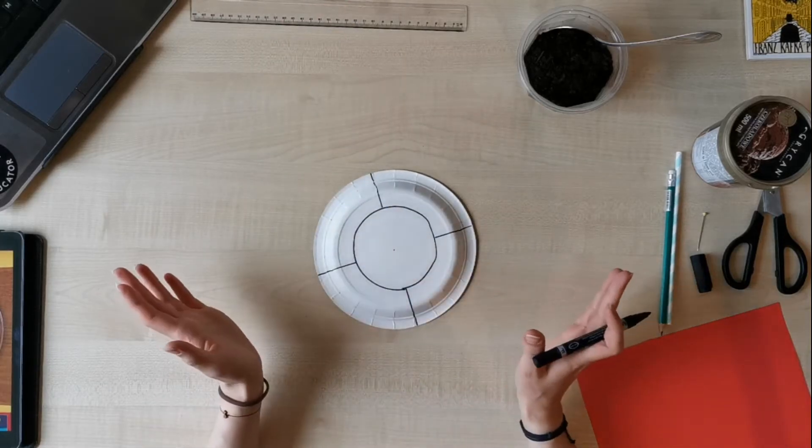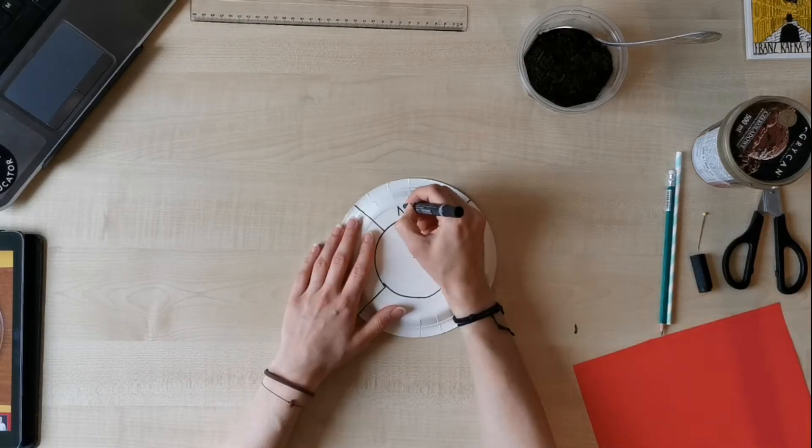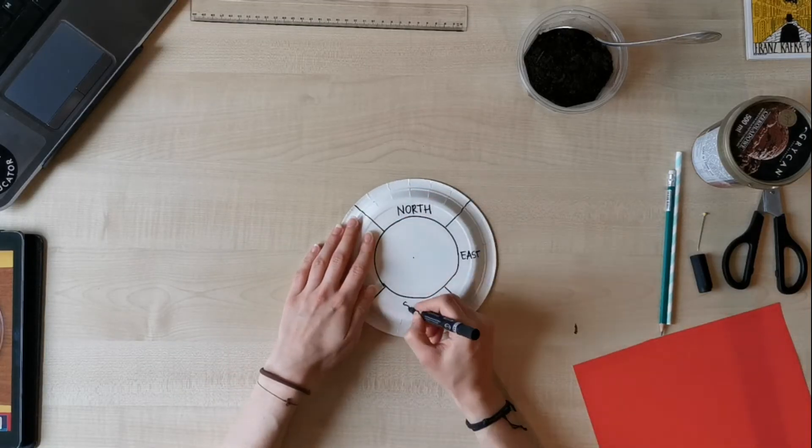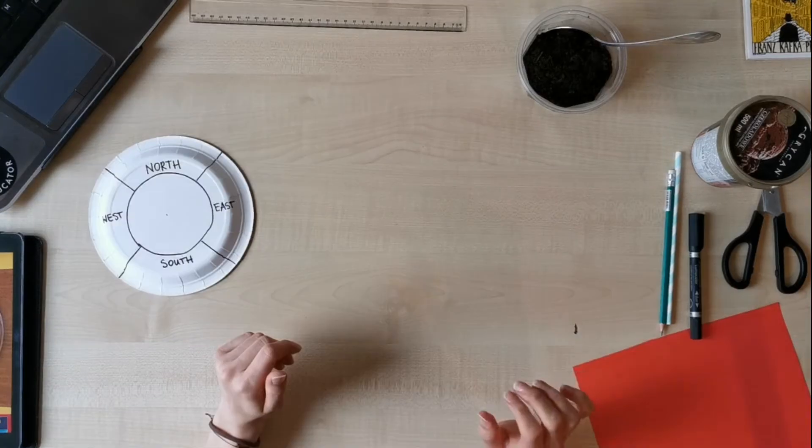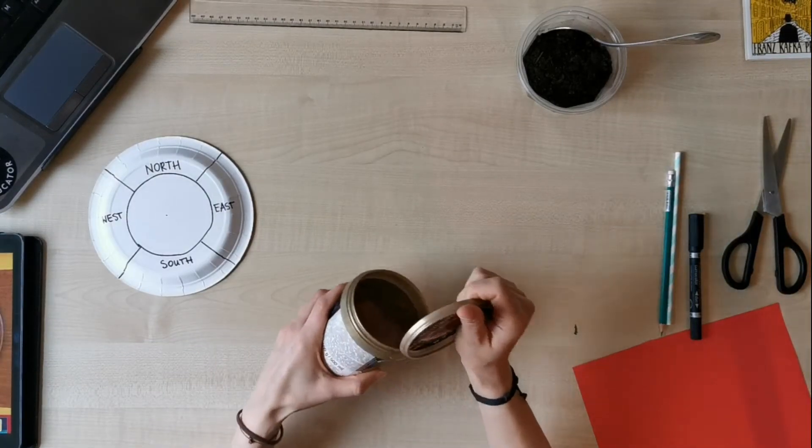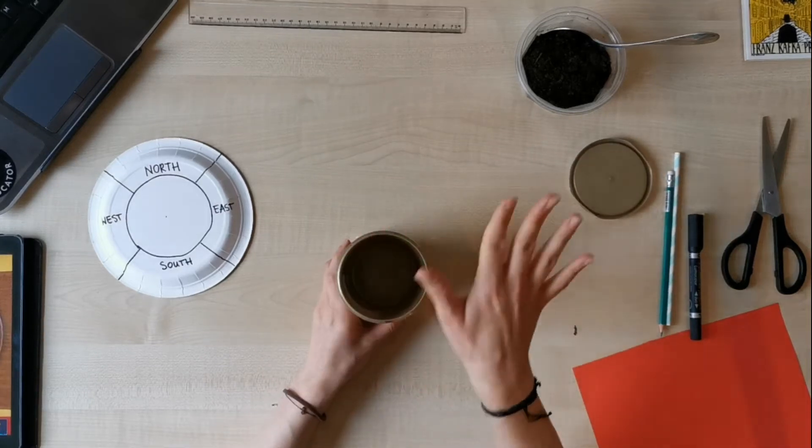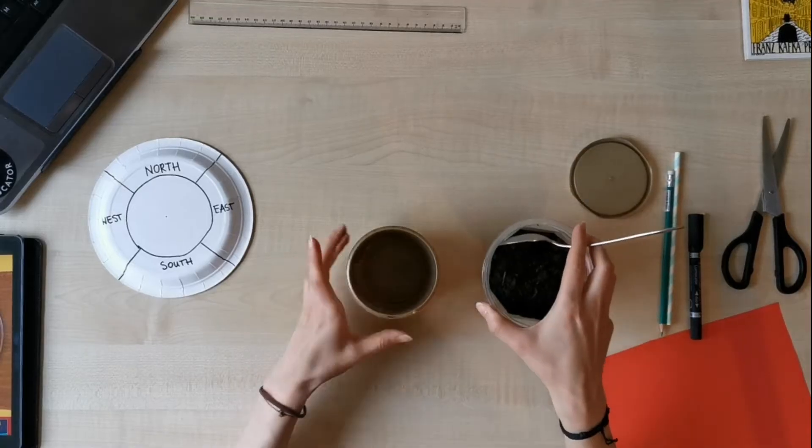And now we have to write the words for the four parts on the compass. We have to take the container, open it, put rocks or sand or soil, as I have soil, inside.